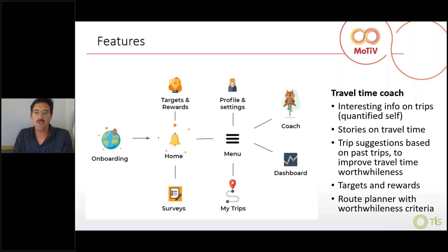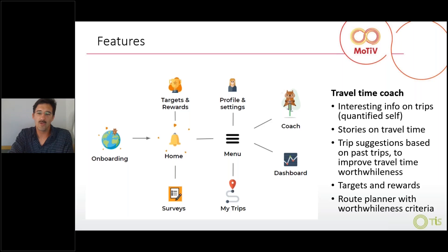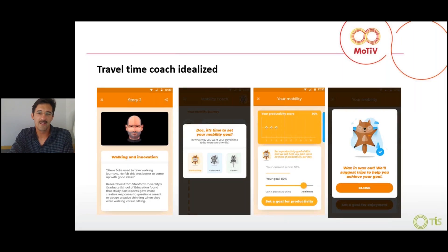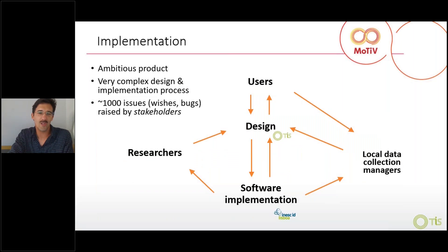The app included targets, rewards, and a coach that would share interesting info, stories, trip suggestions, and a route planner with worthwhileness criteria. These are some mockups of the intended experience with this travel coach. But when we reached implementation, we faced major challenges because this is an ambitious, complex product to design and implement.